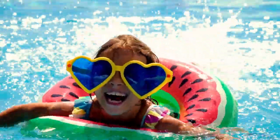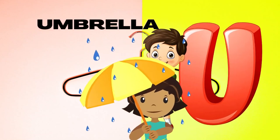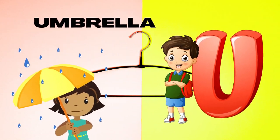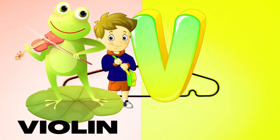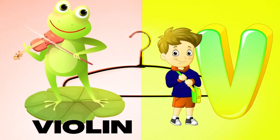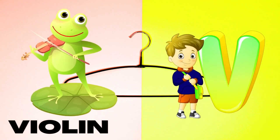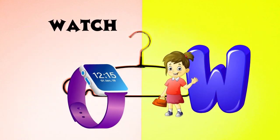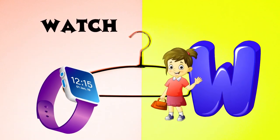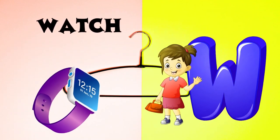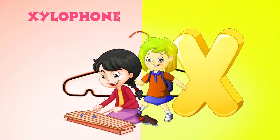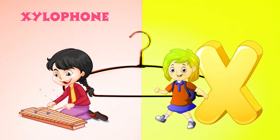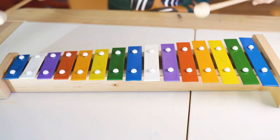U is for Umbrella, U-U-Umbrella. V is for Violin, V-V-Violin. W is for Watch, W-W-Watch. X is for Xylophone, X-X-Xylophone.